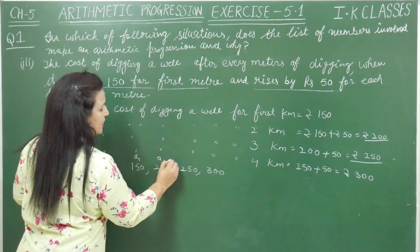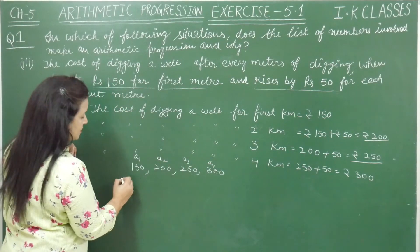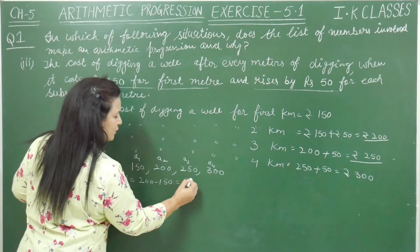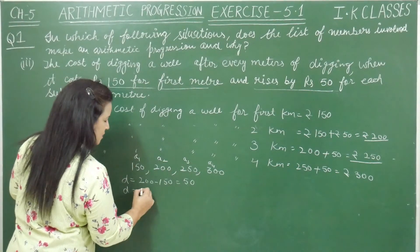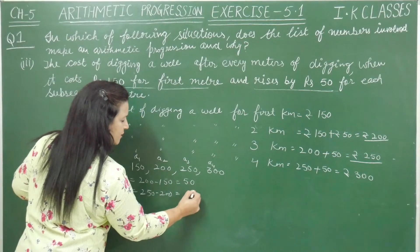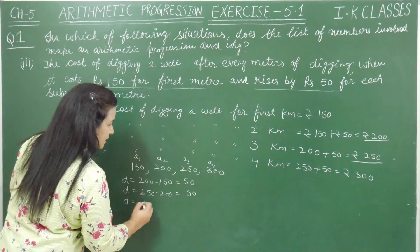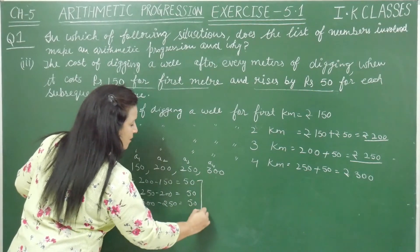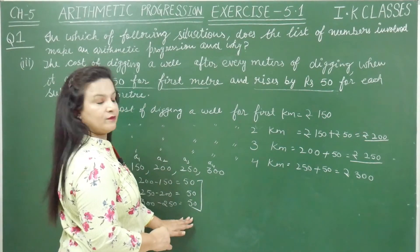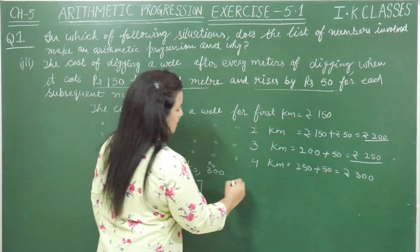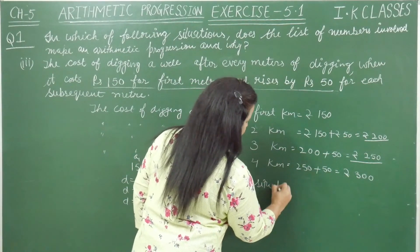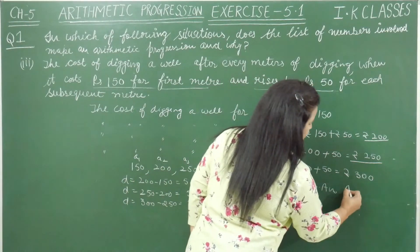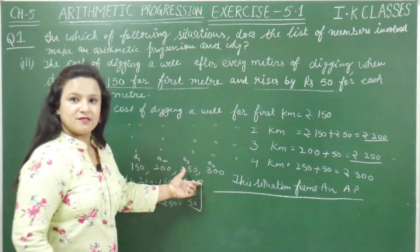Cost for 4 meters: rupees 300. So the numbers are rupees 150, 200, 250, and 300 — these are a1, a2, a3, a4. Common difference: a2 minus a1 = 200 minus 150 = rupees 50. And a4 minus a3 = 300 minus 250 = rupees 50. The common difference is the same, so this situation forms an AP.